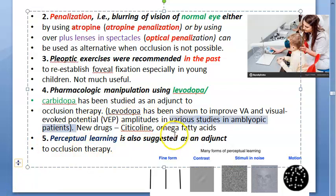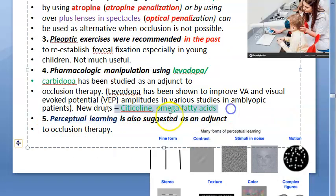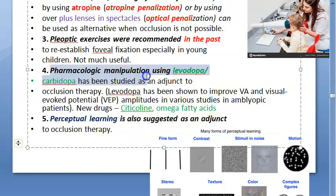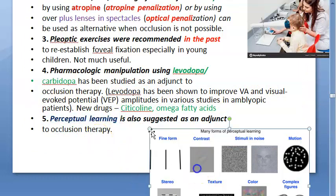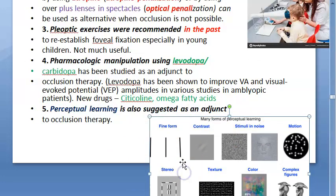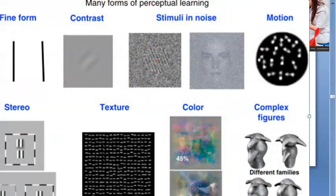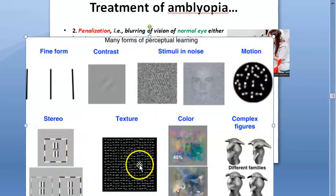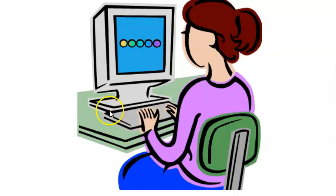Newer pharmacologic agents include citicoline and omega fatty acids. So the pharmacologic manipulation agents are: levodopa-carbidopa, citicoline, and omega fatty acids. Levodopa-carbidopa improves visual acuity and visual evoked potential. Then there is perceptual learning, used as an adjunct to occlusion therapy — involving stimuli like fine form contrast, motion, stereo, texture, color, and complex figures.